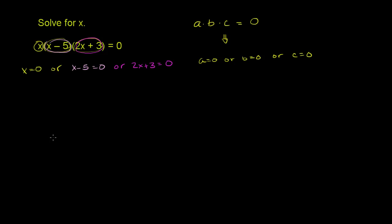Sometimes that's called the principle of zero products. But they're just saying if I take the product of a bunch of things and they equal 0, at least one of those things needs to be equal to 0. So that's all we're applying here. So we've actually already found one solution. x could be equal to 0.